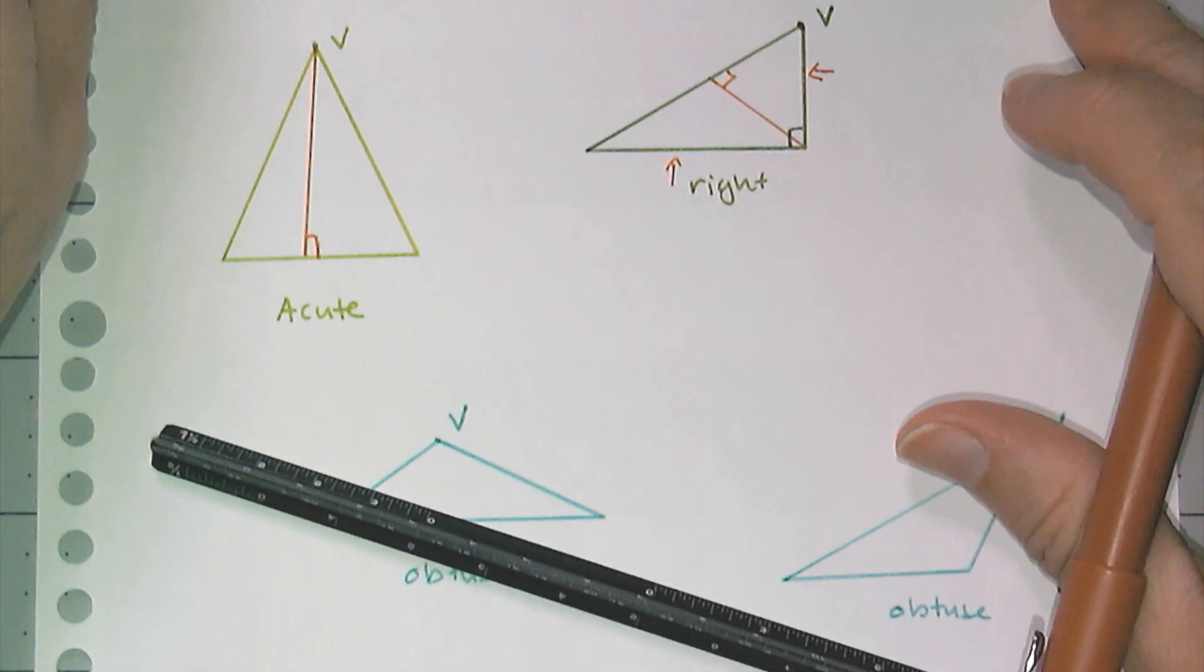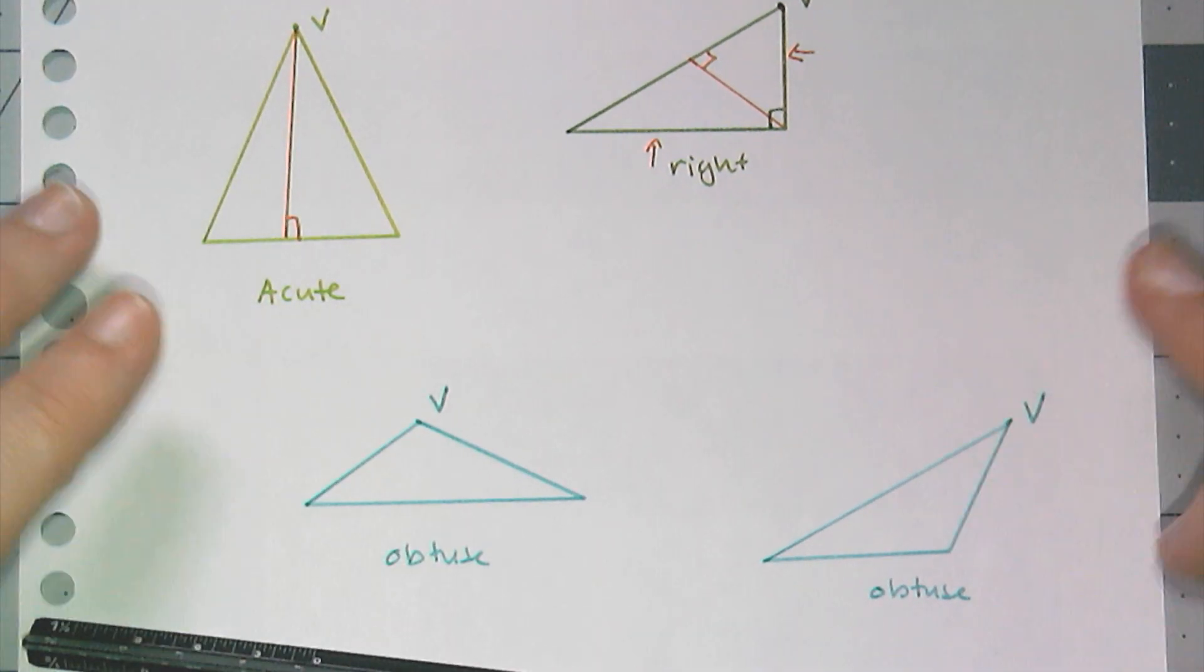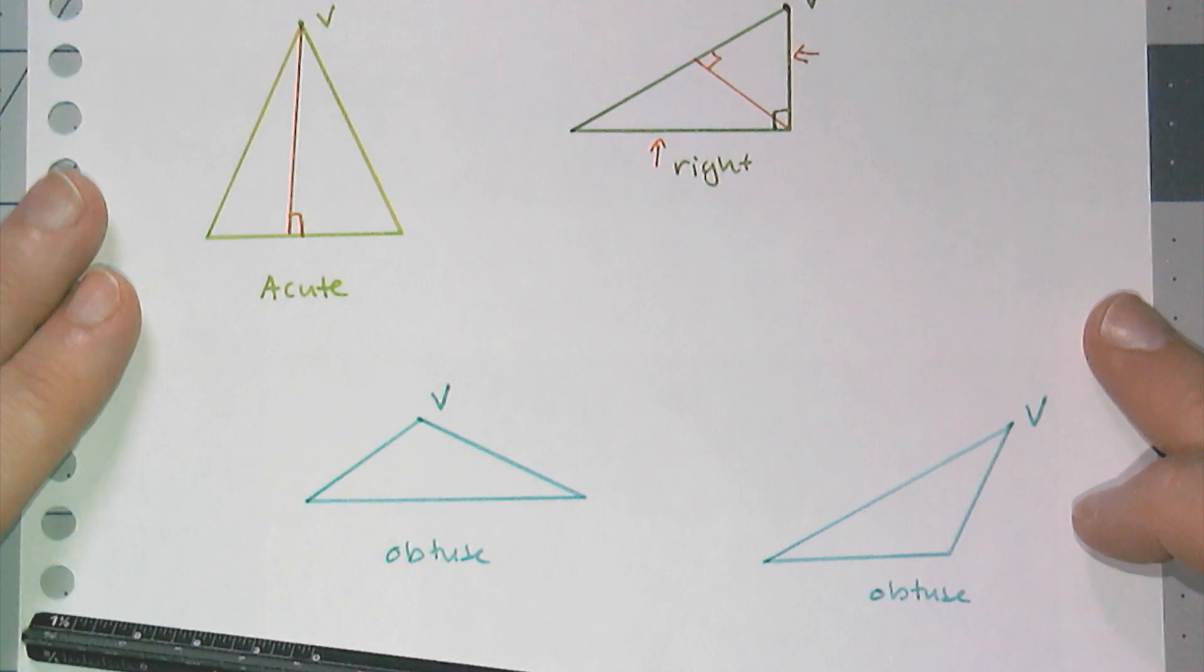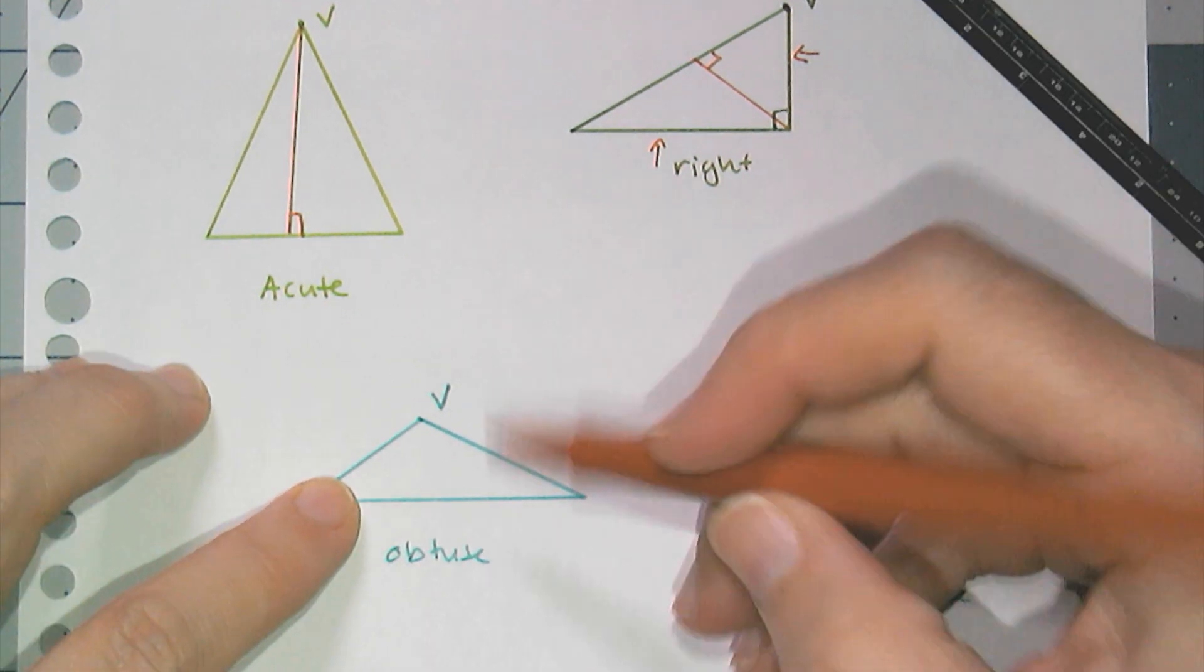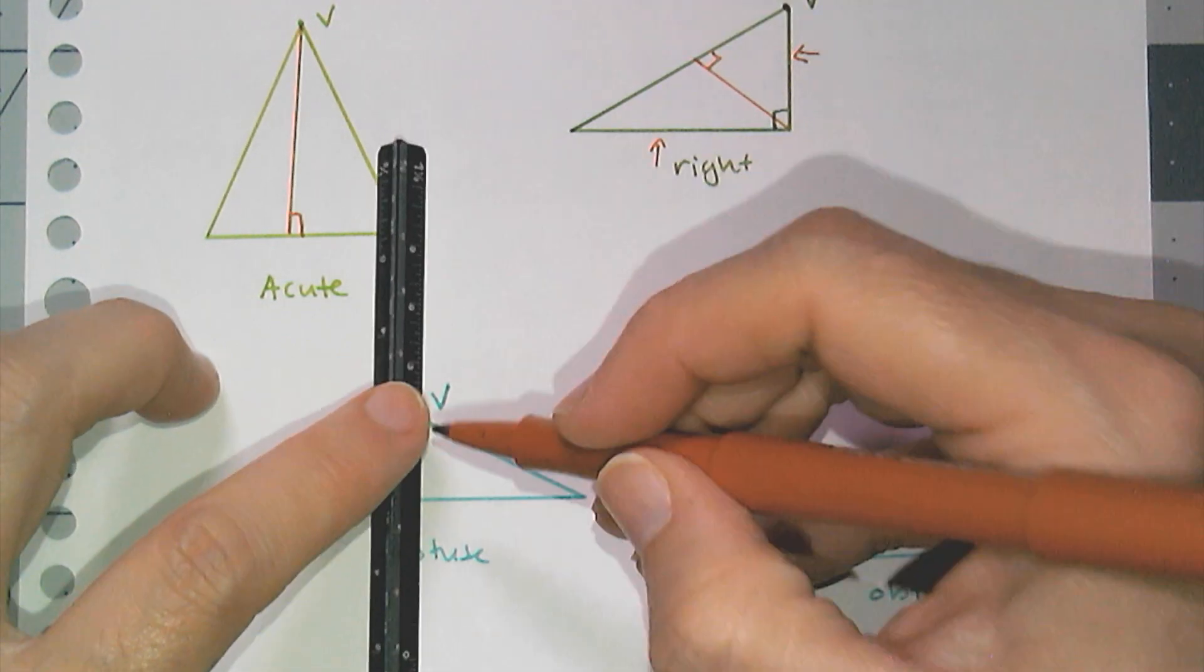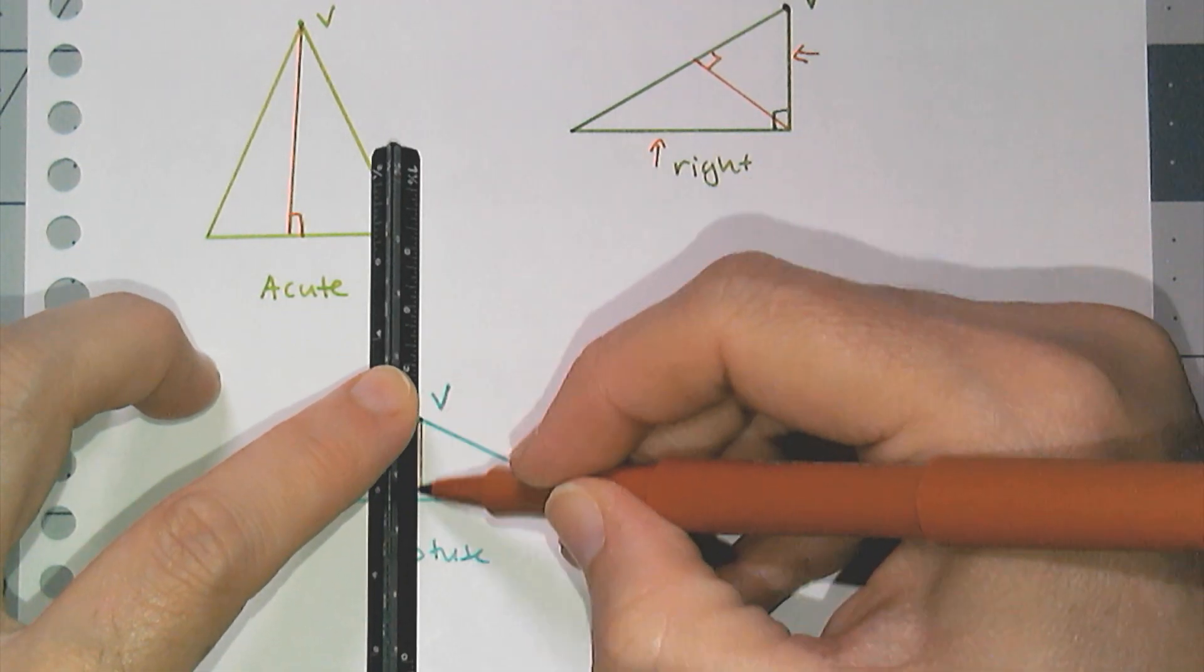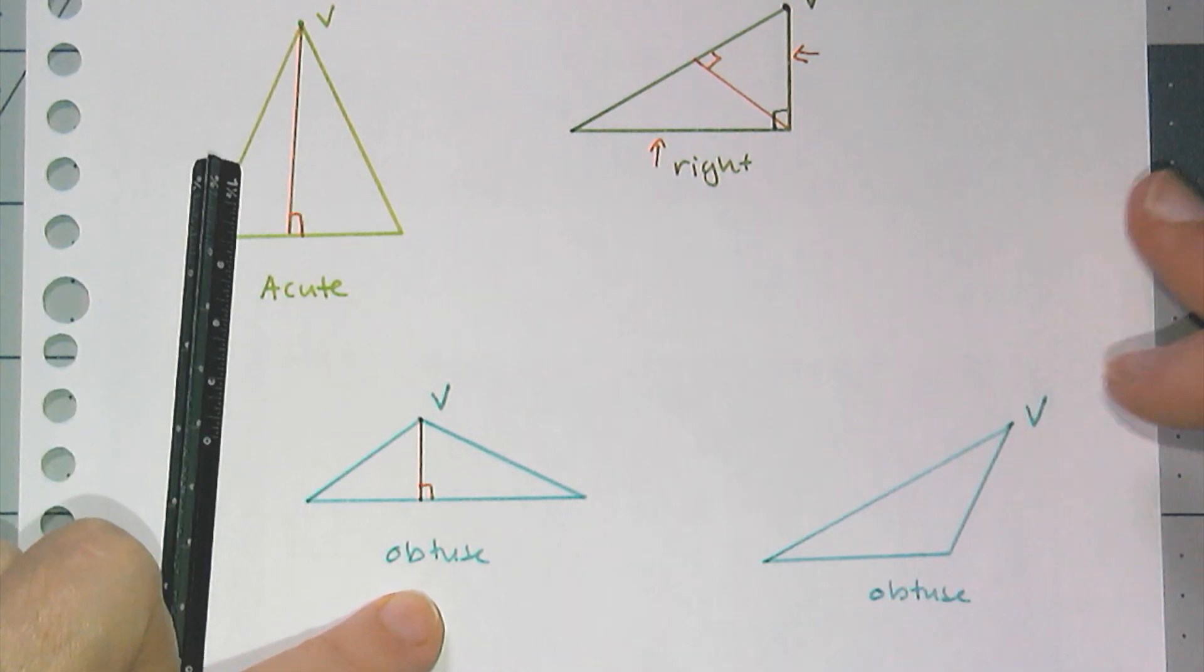But in my years of teaching geometry, it is the obtuse triangle that causes trouble. So when you see an obtuse triangle drawn like this and the vertex happens to be the obtuse angle, then it's easy to see that the altitude is on the interior of the triangle.